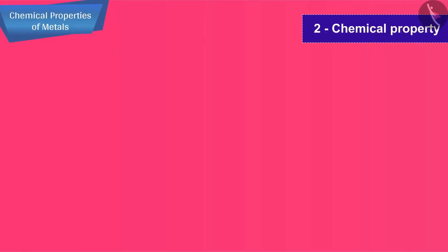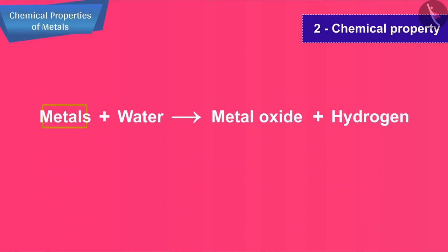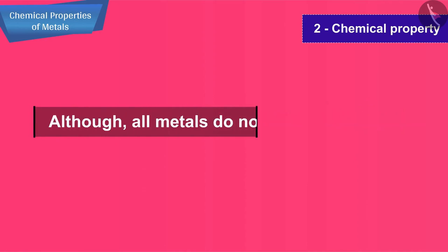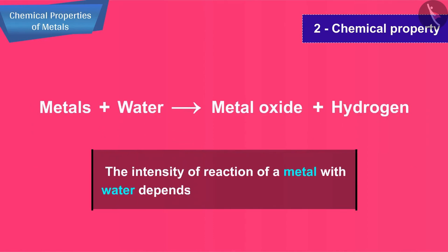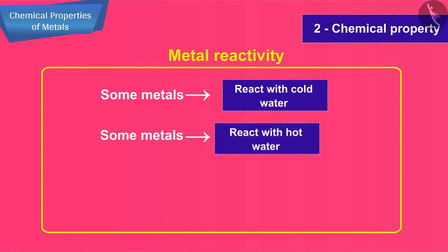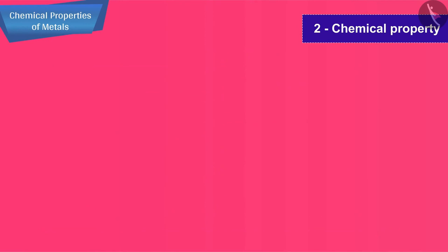The second chemical property that we are about to study is the reaction of metals with water. Metals react with water to form metal oxide and hydrogen gas, although all metals do not react with water. The intensity of reaction of a metal with water depends on its chemical reactivity. Some metals react with cold water, some react with hot water, some react only with steam, whereas some do not even react with steam.